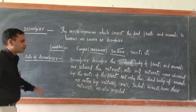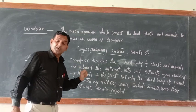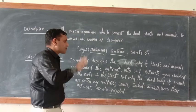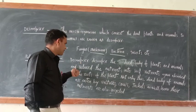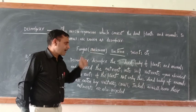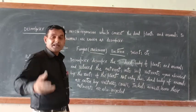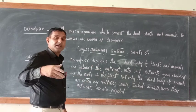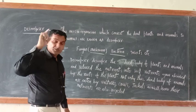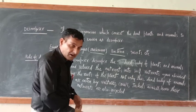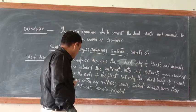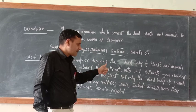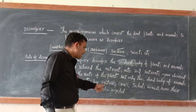What is the role of decomposers? Decomposers play a very important role. They decompose the dead bodies of plants and animals and recycle the nutrients into the soil. The same nutrients are then absorbed by the roots of plants. Not only this — the dead bodies of animals are also eaten by vultures, crows, and jackals. Hence, their nutrients are also recycled.